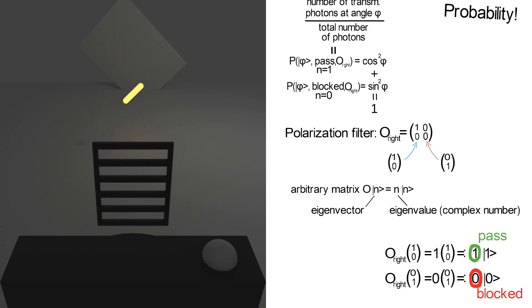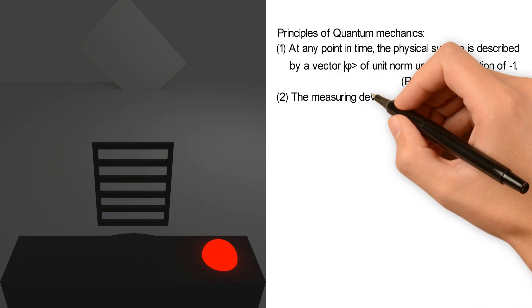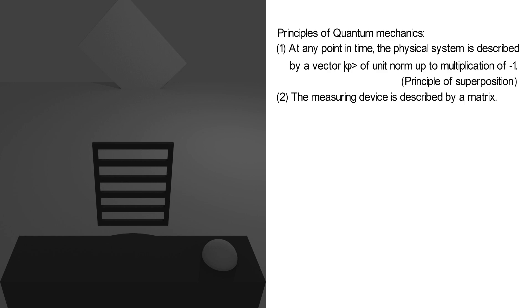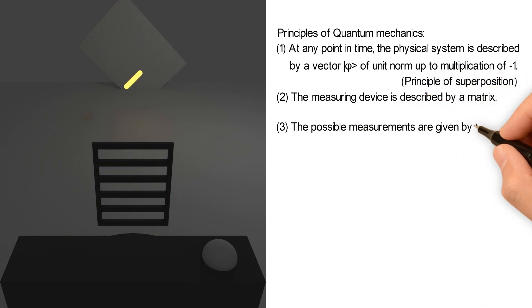This brings us to the next principles of quantum mechanics. First, the measuring device, in our case the polarization filter plus the detector, is described by a matrix. And secondly, the possible measurements are given by the eigenvalues of this matrix.